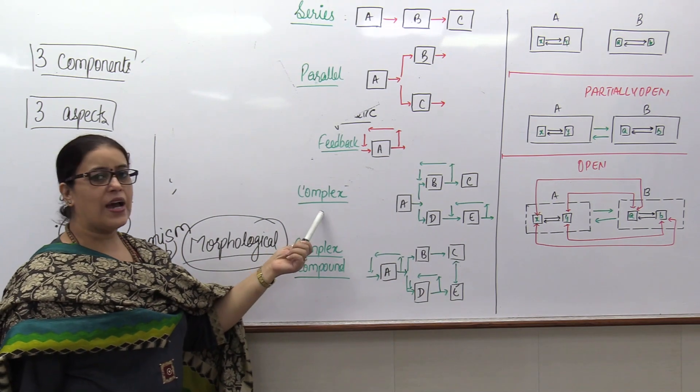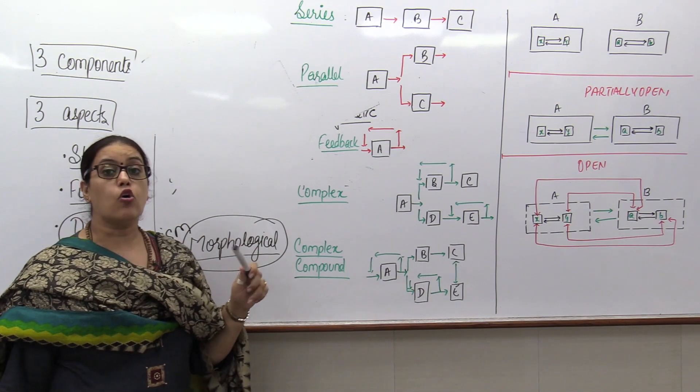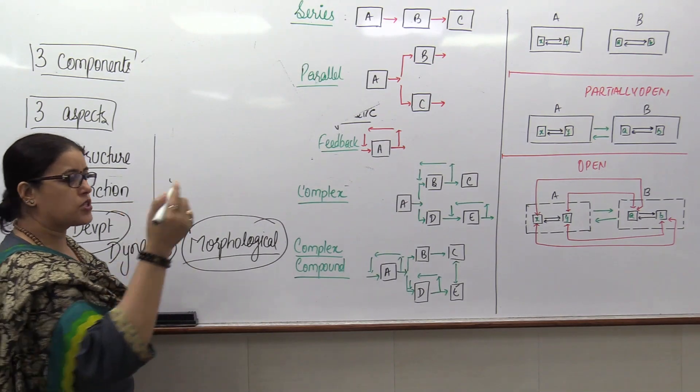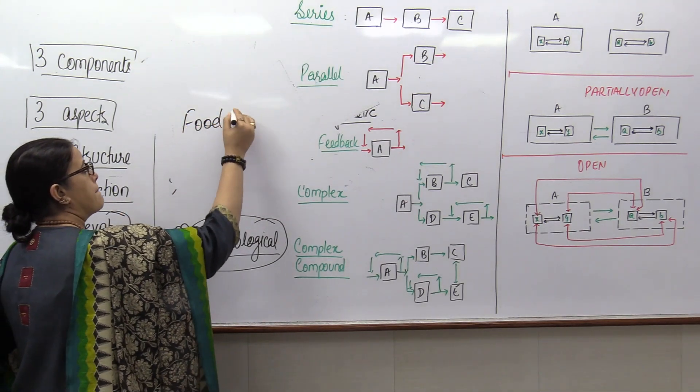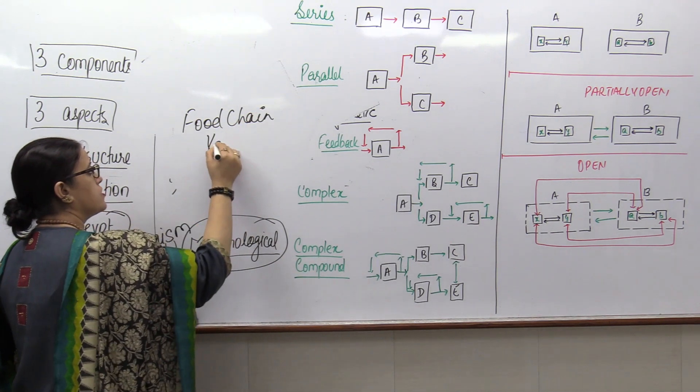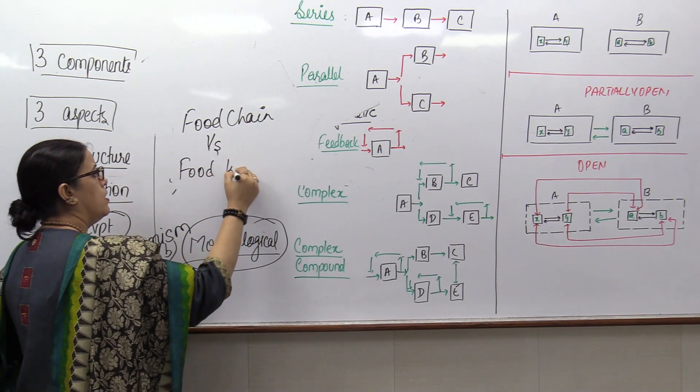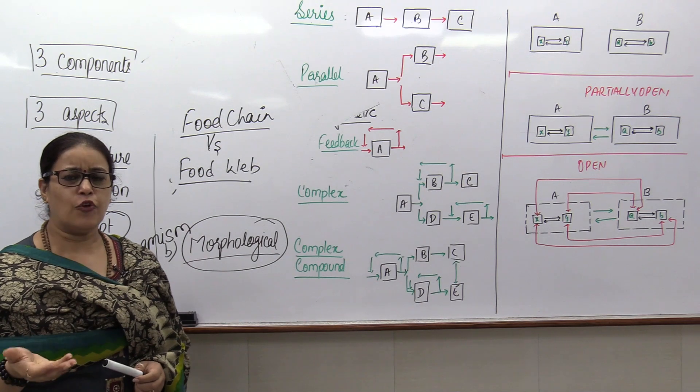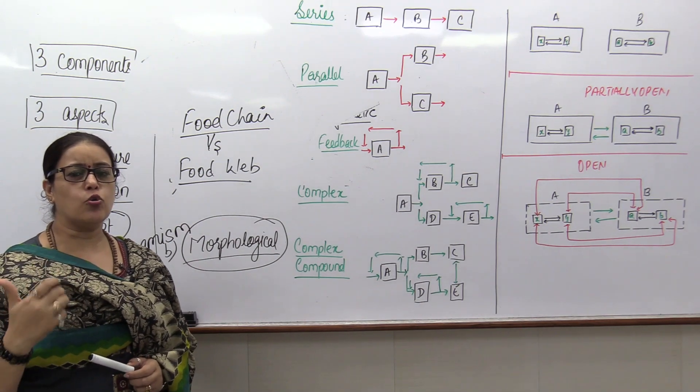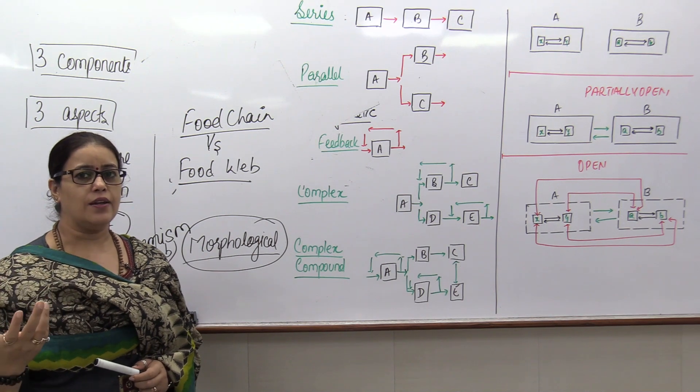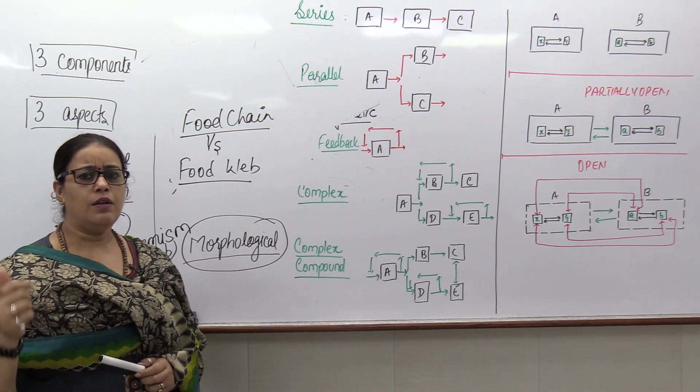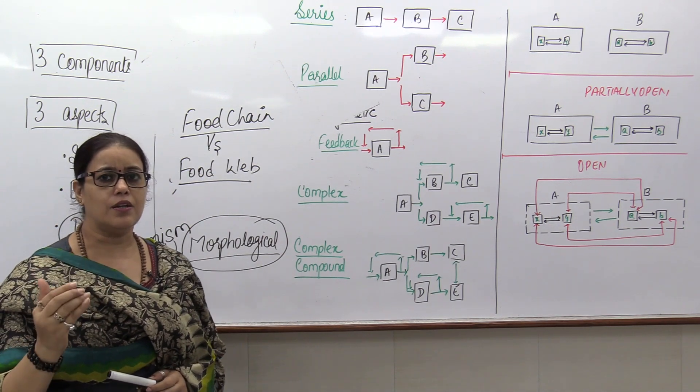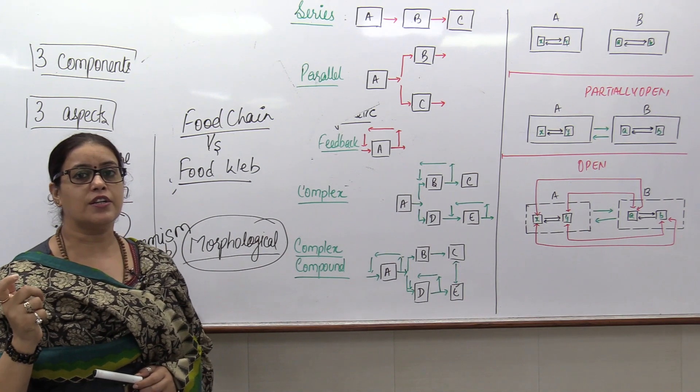In the sense that if I have to just compare food chain versus food web, I don't think there should be any prize for guessing which is more real. It is by default food web. But while learning what do we take towards stride? It is food chain. Apply that logic. Parallel, feedback and sequential system are considered to be theoretical because of the simplicity of the networking that has been shown here.